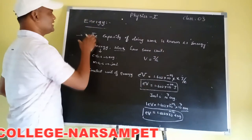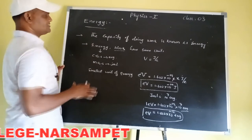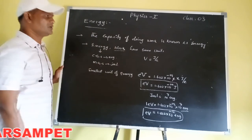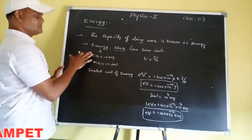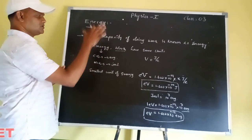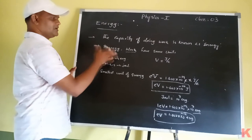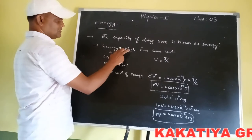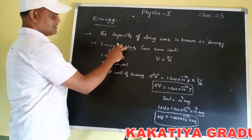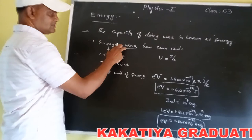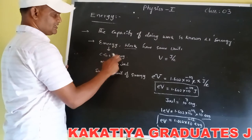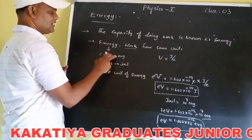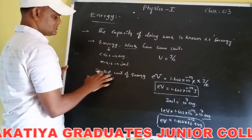Energy is nothing but the capacity of doing work. Generally, energy and work have the same units. In CGS the unit is erg, and in MKS the unit is joule. Similarly, energy also has the same units.